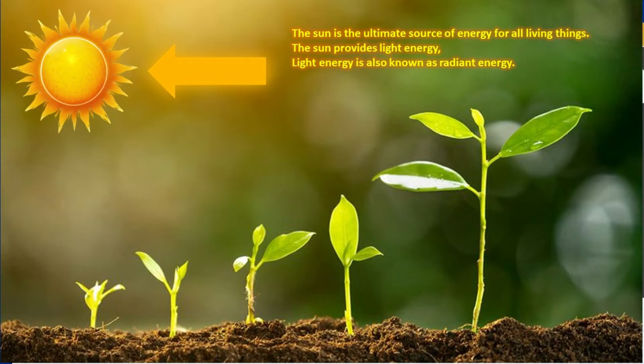A green plant, on the other hand, is able to use the light energy from the sun and convert it into chemical energy. Plants are able to produce their own food because their leaves act as food factories. This process is known as photosynthesis. This chemical energy can now be used by the very plant that made it, by the buck that eats the plant, and when the lion eats the buck, it gets to use that same chemical energy that is stored in the buck.